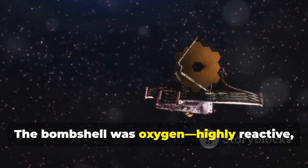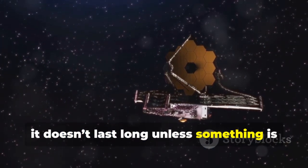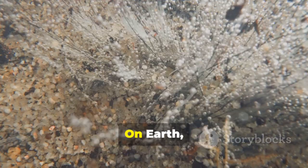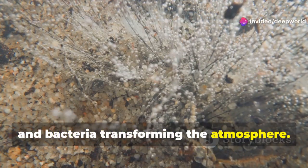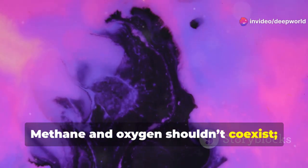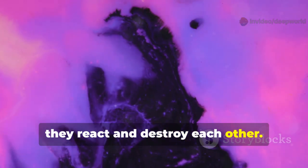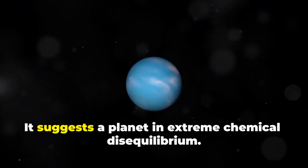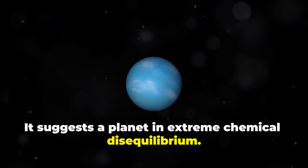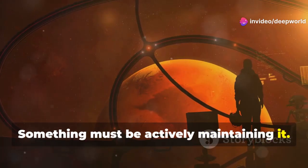The bombshell was oxygen, highly reactive—it doesn't last long unless something is constantly producing it. On Earth that's photosynthesis: plants, algae, and bacteria transforming the atmosphere. Methane and oxygen shouldn't coexist, they react and destroy each other. Finding both in large quantities is chemically shocking. It suggests a planet in extreme chemical disequilibrium. Something must be actively maintaining it. On Earth, only life does that.